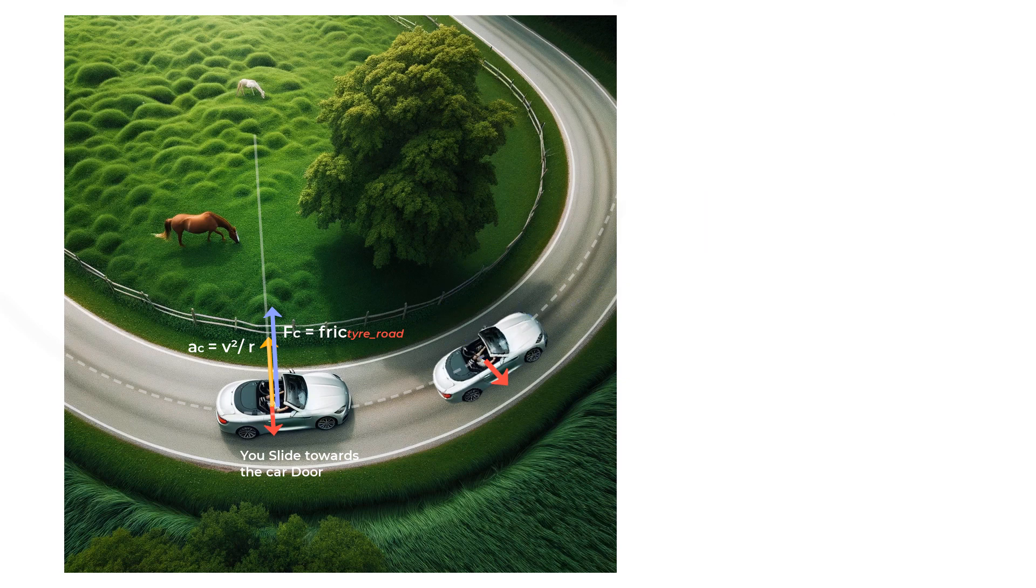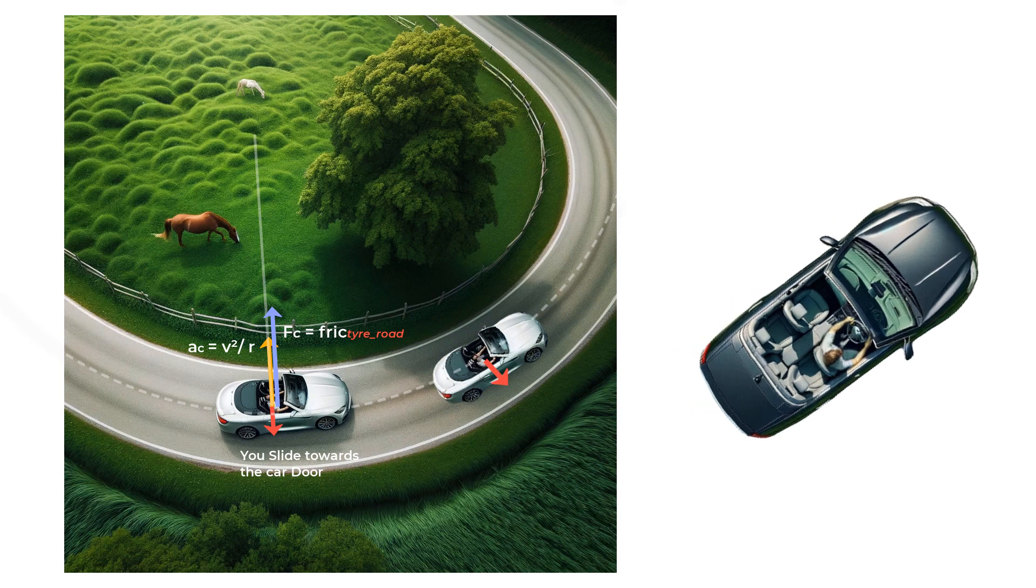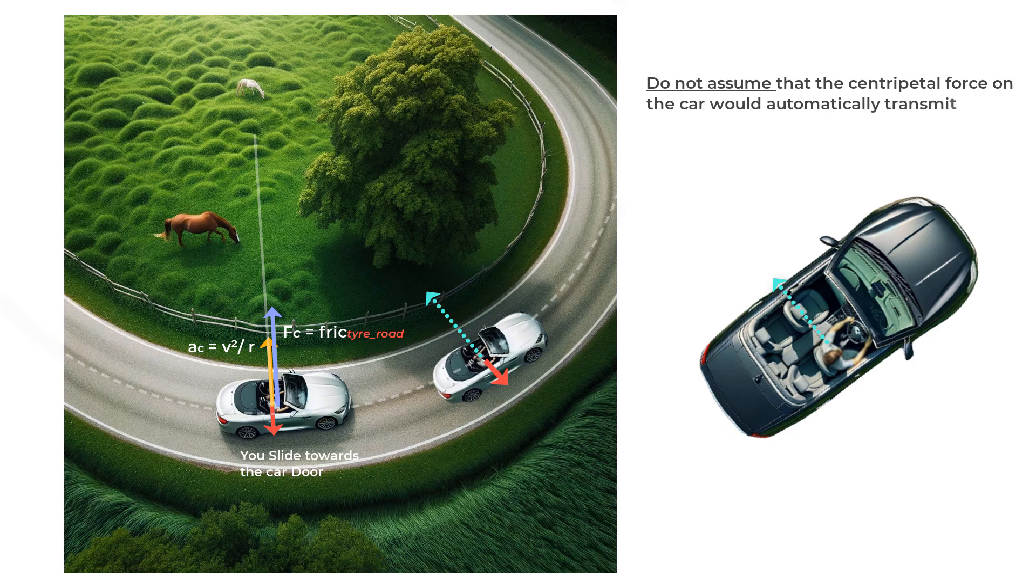Now, what about the passenger in the car? If you are to move in uniform circular motion, along with the car, there has to be a centripetal force on you as well. Now, do not assume that the centripetal force on the car will automatically be transmitted to you as well. Remember free body diagrams. If you make a free body diagram of the car, the force is very much acting on the car. But if you were to draw the passenger's free body diagram, this force is not acting on the passenger.